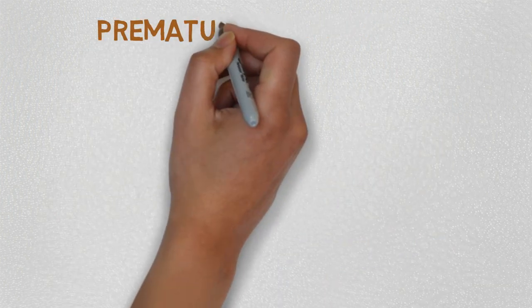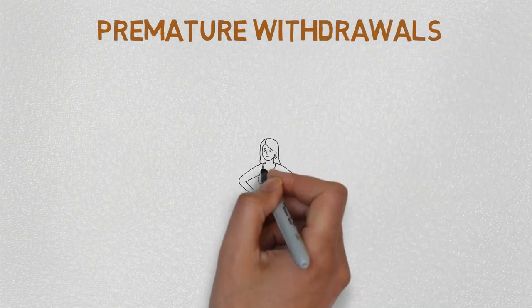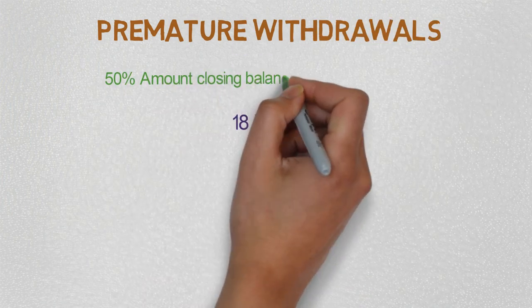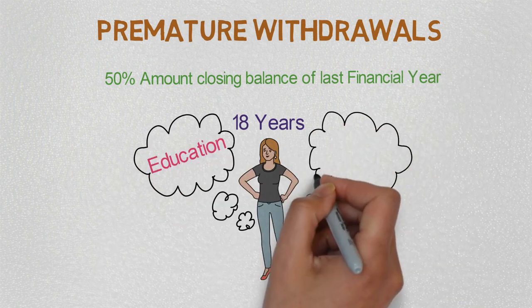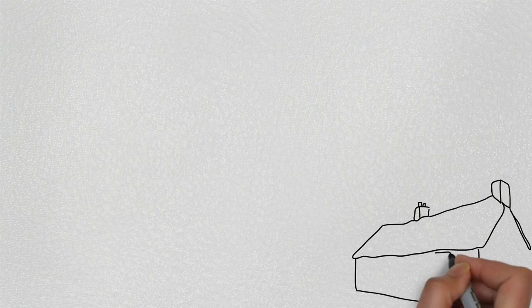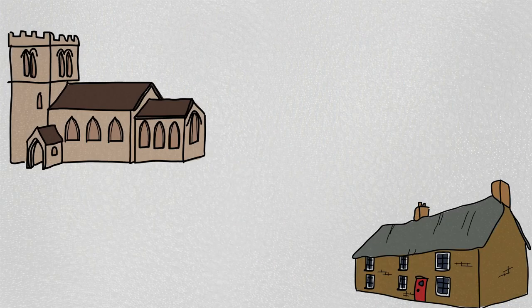After a girl completes 18 years, then 50% of the money in the account in the last financial year can be withdrawn for the purpose of marriage or education. If a girl moves to another city, then the account can be transferred too.